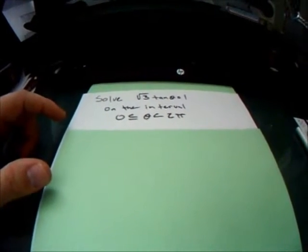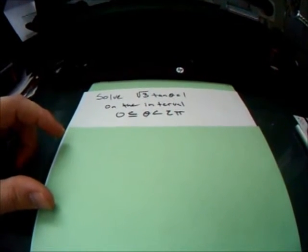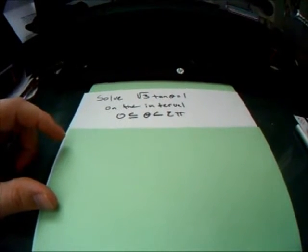Okay, so our problem here is to solve square root of 3 tangent theta equals 1 on the interval 0 is less than or equal to theta, which is less than 2 pi.